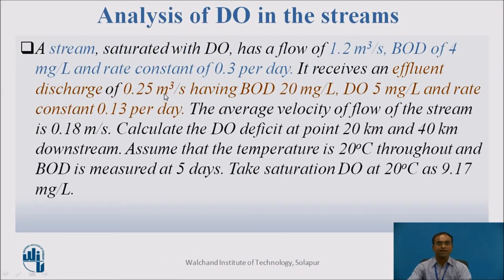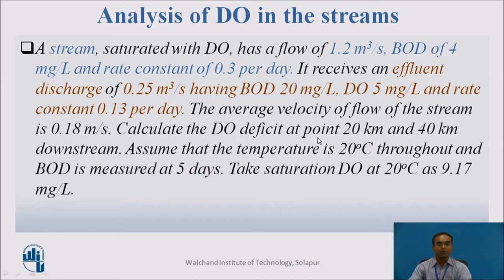We are taking one example to understand the analysis of DO. A stream is given which is saturated with DO, having a flow of 1.2 cubic meters per second. It also has a DOD of 4 mg/L and a rate constant of 0.3 per day. It receives an effluent discharge of 0.25 cubic meters per second having a BOD of 20 mg/L, DO of 5 mg/L, and a rate constant of 0.13 per day. The average velocity of flow is 0.18 meters per second. It has been asked to calculate the DO deficit at points 20 km and 40 km downstream. Assume temperature is 20°C throughout, BOD is measured at 5 days, and saturation DO at 20°C is 9.17 mg/L.